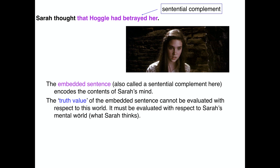The truth value of the embedded sentence can't be evaluated with respect to our world. We don't actually know whether or not Hoggle had betrayed her — we have no idea. All we know is that she thought he did. That's what we can evaluate: did she think that or did she not? But we have no idea if this part is true or not. This has to be evaluated with respect to what Sarah thinks.